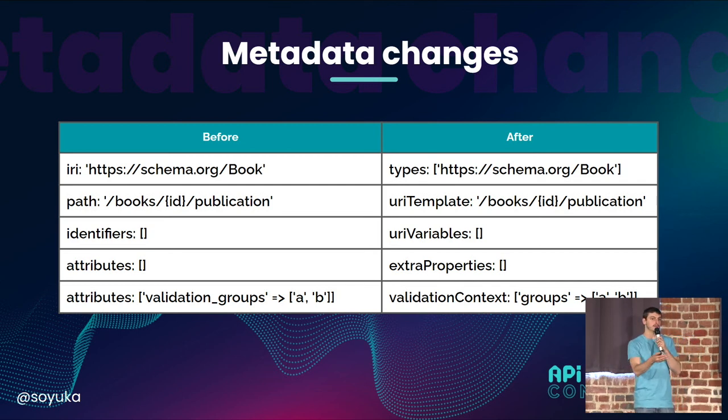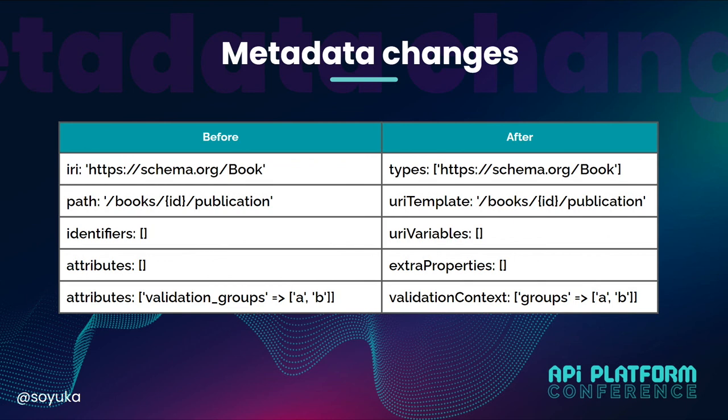When you use old metadata attributes, you will have deprecations saying you are using this one and now it is this one. IRI became types. Path became URI templates. Identifiers became URI variables. Attributes became extra properties. And we have this validation group that is now a property called validation context where you have to put the groups.